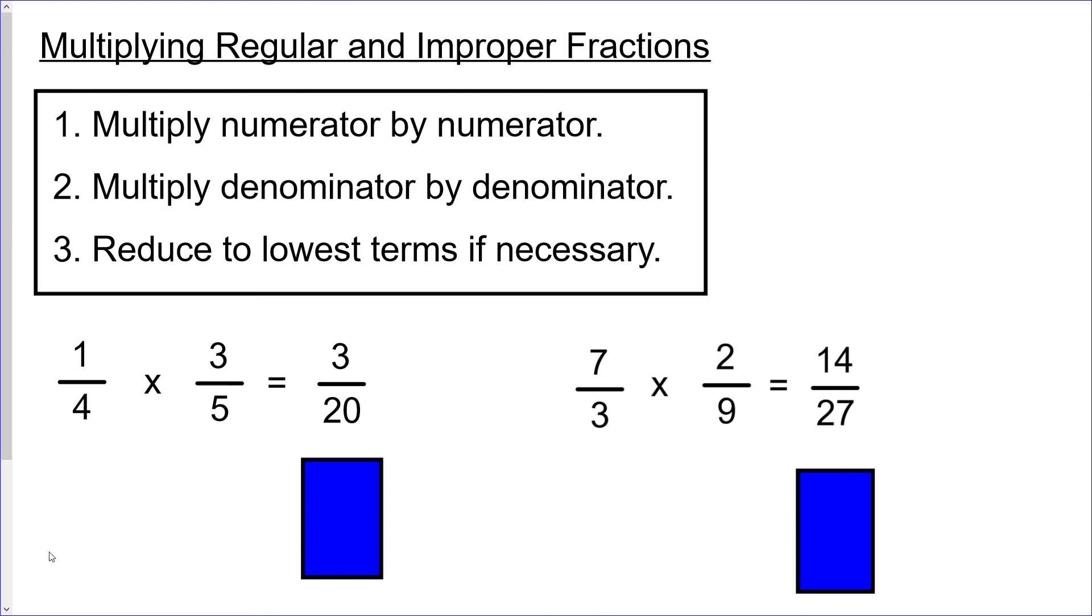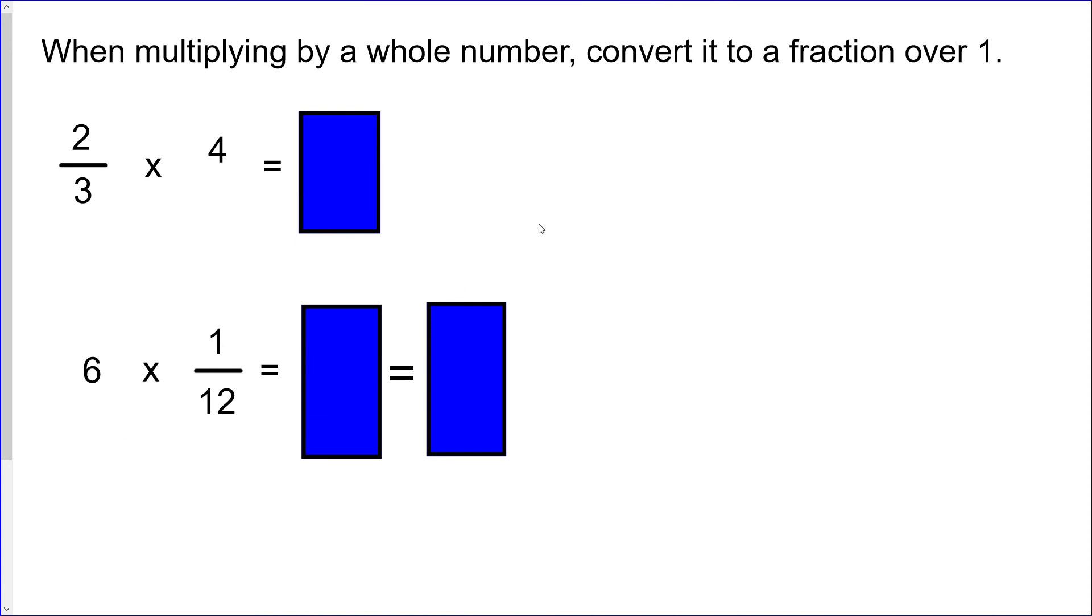One tricky thing that comes up a little bit when we are using these is what to do when you're multiplying a fraction by a whole number. Basically what you do with that is you simply convert the whole number to a fraction over one. So you literally just put it over one, because four over one is equivalent to just the number four. We just would never normally write that if we were using the number four because that would be silly.